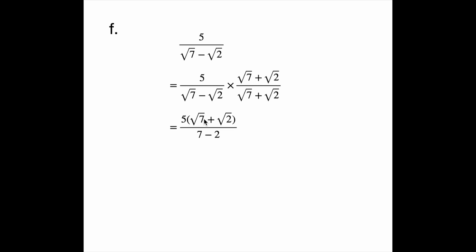Giving us 5 times root 7 plus root 2, over the square of root 7 — which is 7 — minus the square of root 2 — which is 2. 7 minus 2 is 5. The 5s cancel, and we're left with root 7 plus root 2. And that's it for question f. Have a good day.